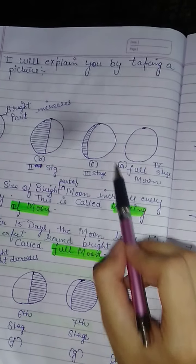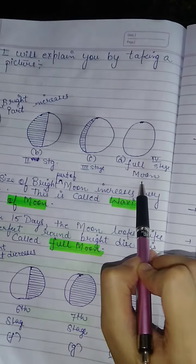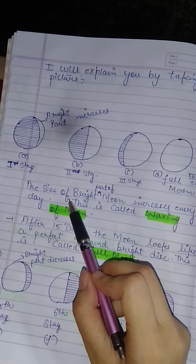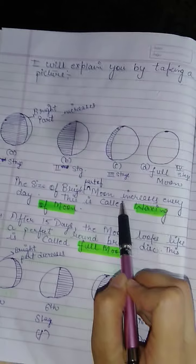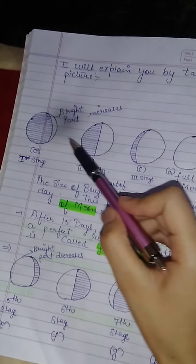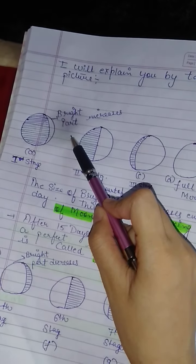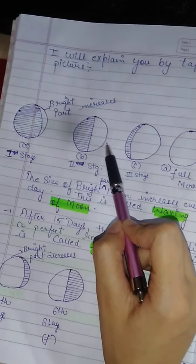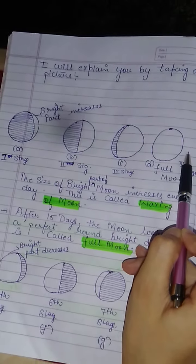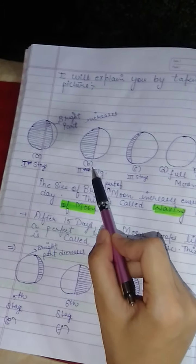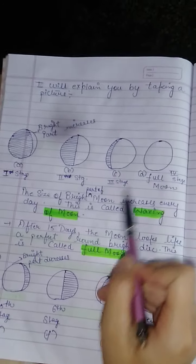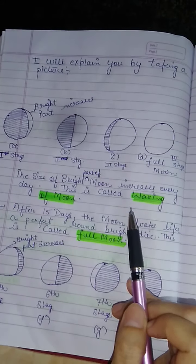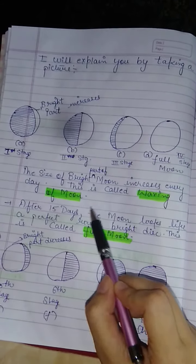Eventually the entire bright part of the Moon becomes visible — this is called full moon day. The size of the bright part increases every day. This increasing of the Moon's bright part day by day is called waxing of the Moon. Waxing of the Moon is a very important term.